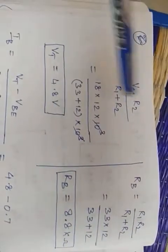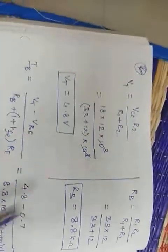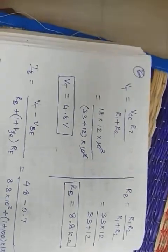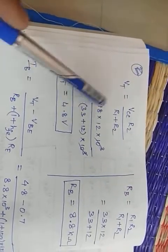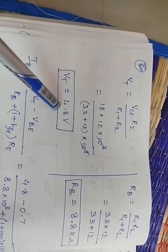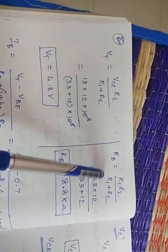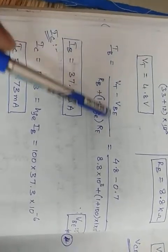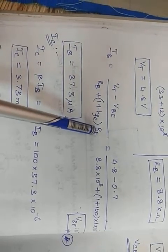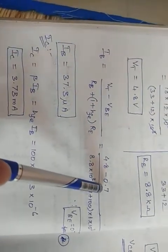Start by calculating VT: VT = VCC × R2 / (R1 + R2). Substituting the given values, VT = 4.8V. Then RB = R1×R2 / (R1 + R2). After simplifying, RB = 8.8kΩ. Then IB = (VT − VBE) / (RB + (1 + HFE) × RE). VBE = 0.7V. Substituting all values, IB = 37.3 microamps.